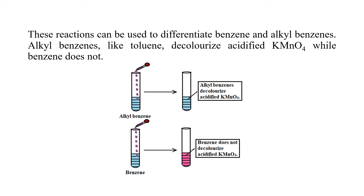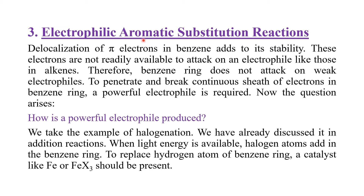क्योंकि benzene इन conditions में reaction नहीं देती, इसलिए यह reaction benzene को alkyl benzene से differentiate करने के लिए use हो सकती है। Alkyl benzene जैसे कि toluene, acidified potassium permanganate को decolorize कर देती है जबके benzene नहीं करती। We have an alkyl benzene - when acidified potassium permanganate is added to it, its color will be discharged, जबके benzene के case में color discharge नहीं होगा और potassium permanganate का pink color नज़र आता रहेगा।